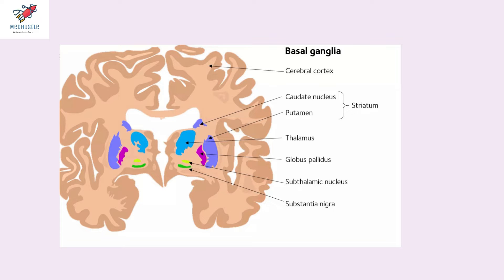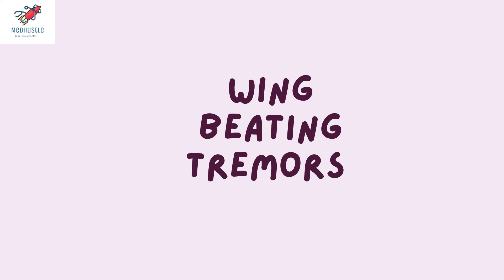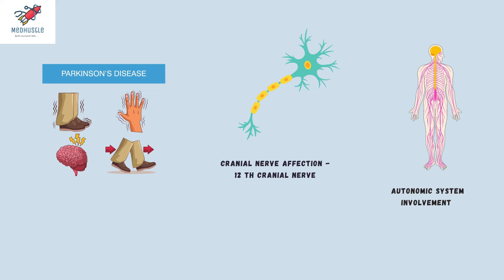The central nervous system can also get affected, with the most common site being the basal ganglia. Patients can have typical tremors known as wing-beating tremors, as shown here. Other CNS manifestations include a Parkinsonism-like picture, cranial nerve affection — mainly the 12th cranial nerve — and autonomic nervous system involvement. Importantly, the sensory and motor systems are not affected.